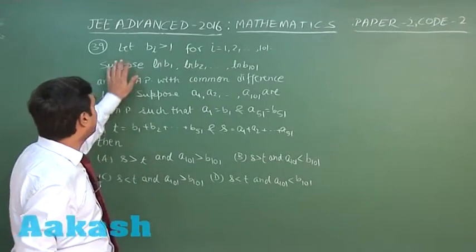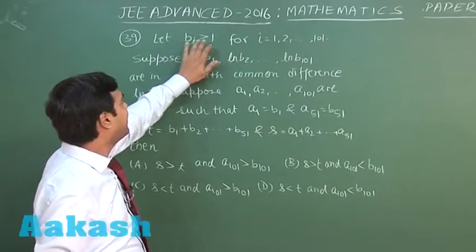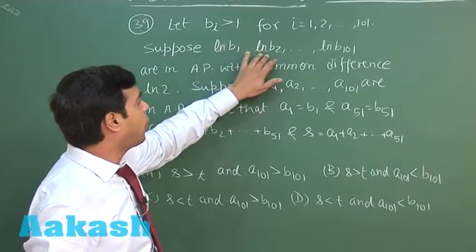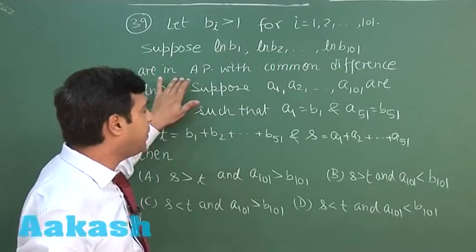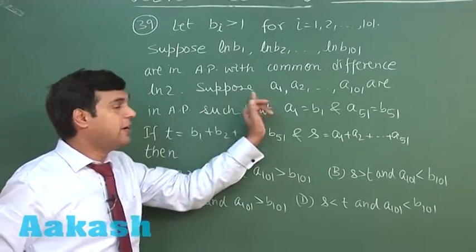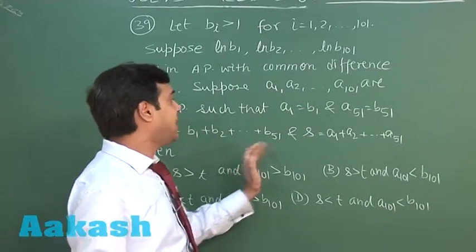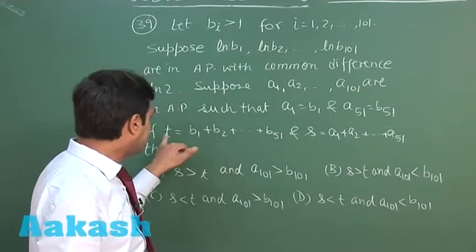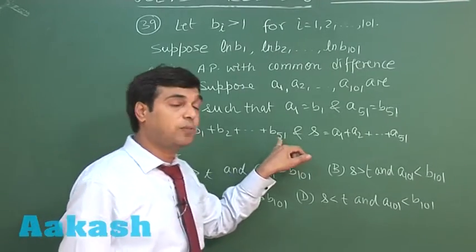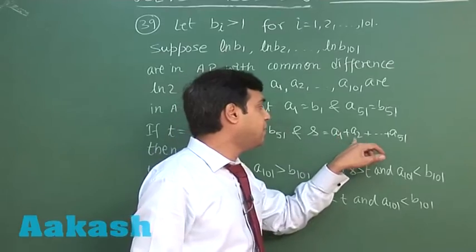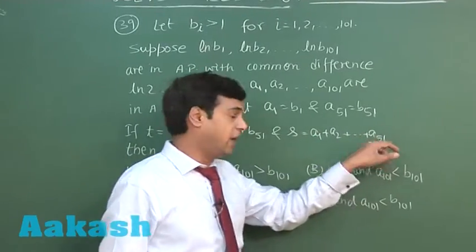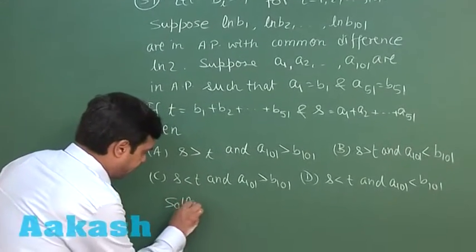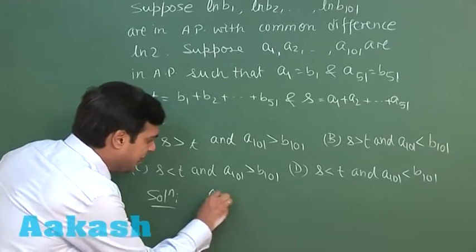Let's take question number 39. Let b_i be greater than 1 for all i = 1, 2, 3 up to 101. Suppose log(b1), log(b2), etc. are in AP with common difference log 2. a1, a2, a3 are also in AP such that a1 equals b1 and a51 equals b51. If T equals b1 + b2 + ... + b51 and S equals a1 + a2 + ... + a51, then which of the following is correct?